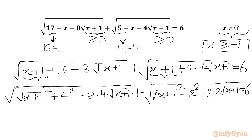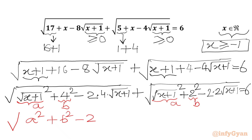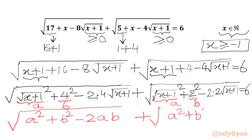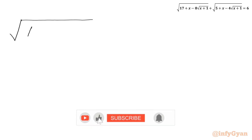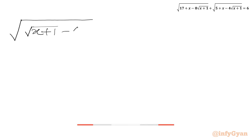Now if we consider square root of x plus 1 equal to a and 4 equal to b, and here also square root of x plus 1 equal to a and 2 equal to b, then we can write square root of a squared plus b squared minus 2ab inside each radicand. So we are getting the algebraic formula a minus b whole squared, because a squared plus b squared minus 2ab equals a minus b whole squared. So we can write our equation as square root of square root of x plus 1 minus 4, whole squared.